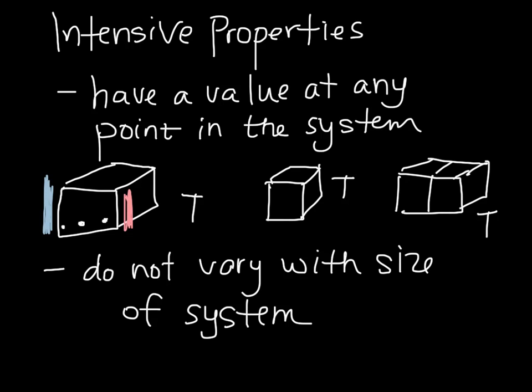If this side of the cube was held at a different temperature than this side, we might have a temperature gradient across the system.